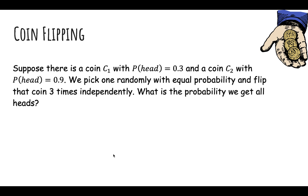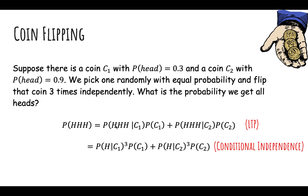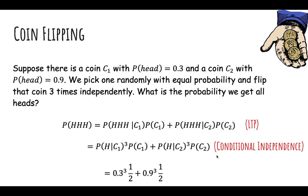Suppose there's coin C1 with probability of heads 0.3 and coin C2 with probability of heads 0.9. We pick one randomly with equal probability and flip that coin three times independently. What's the probability of getting all heads? Using the law of total probability: P(3 heads) = P(3 heads | C1) × P(C1) + P(3 heads | C2) × P(C2). Given which coin you have, the flips are conditionally independent, so P(3 heads | C1) = 0.3³ and P(3 heads | C2) = 0.9³. This gives 0.3³ × 0.5 + 0.9³ × 0.5. This is what conditional independence means.